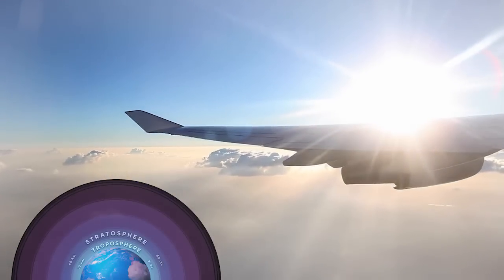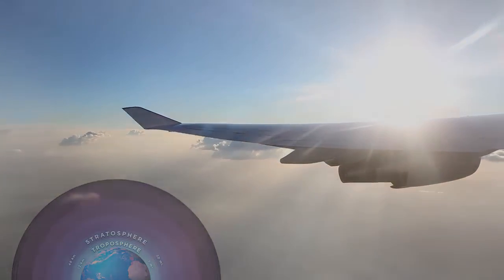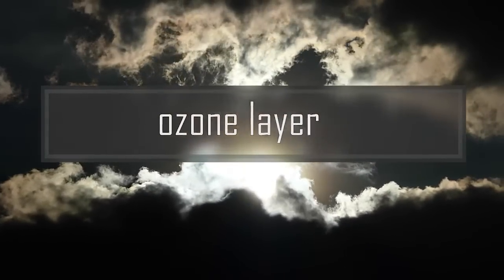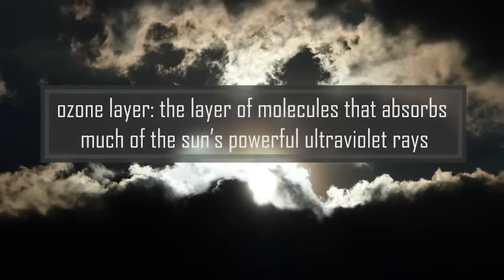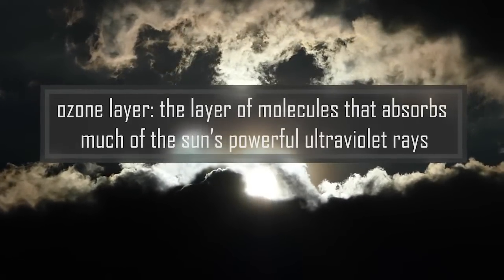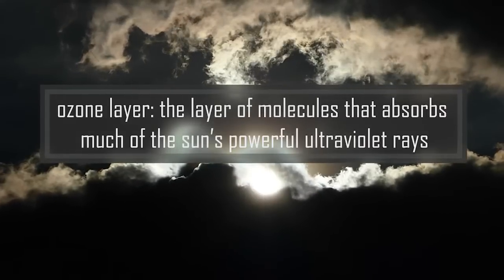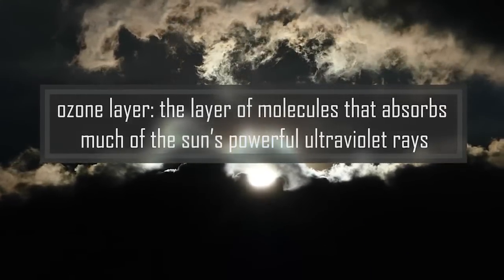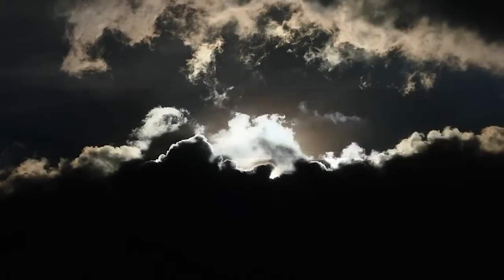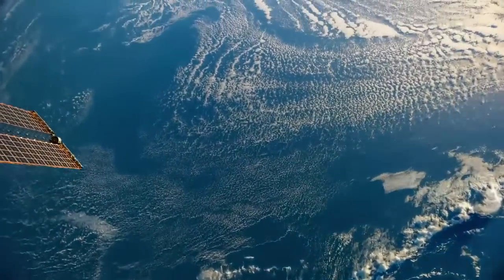The stratosphere also contains the ozone layer. This layer of molecules absorbs much of the sun's powerful ultraviolet rays and protects life on Earth. All of these absorbed rays make the ozone layer quite warm just above the stratosphere.